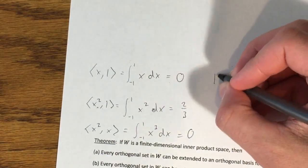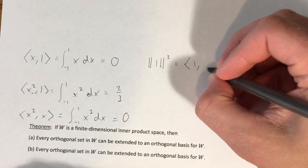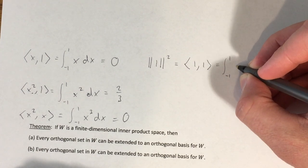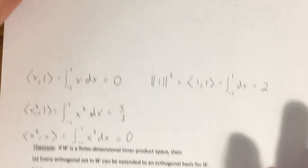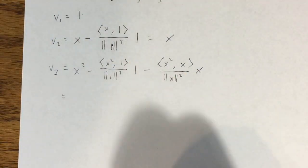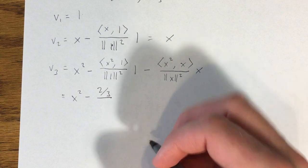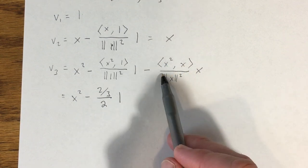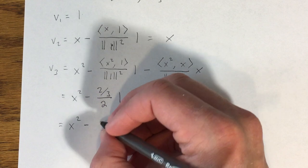We still need to find the norm of 1 squared, which is the inner product of 1 with itself: the integral from -1 to 1 of 1 times 1 dx, which equals 2. Coming back up, v3 is x² minus 2/3 divided by 2, times 1. That gives us x² minus 1/3. The second term drops out entirely because that inner product was 0.